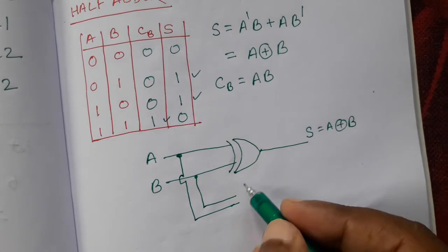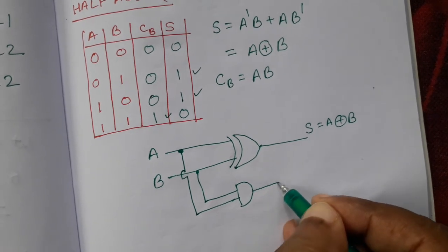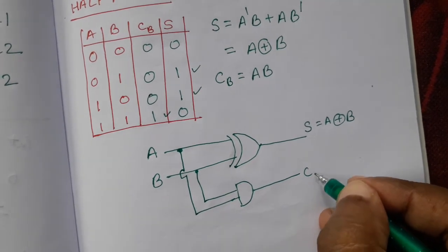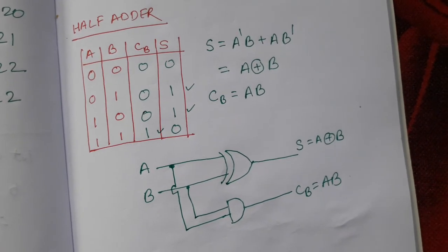So it is A and B, AND gate. That is our carry bit. Carry bit is AB. So this is our half adder logic circuit.